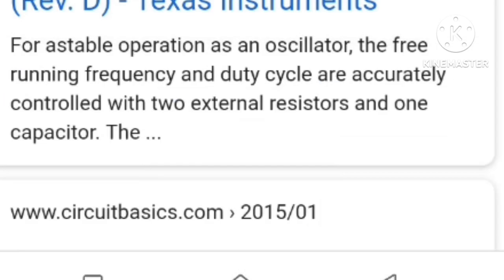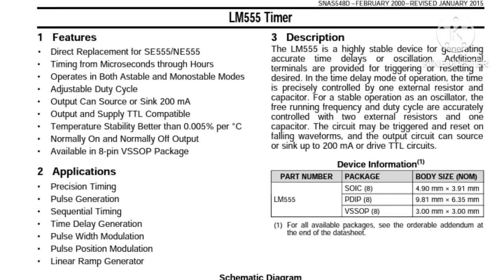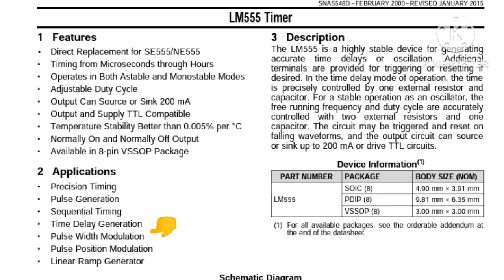Here we have the features of the IC, which is section one. The features describe the functionality of the IC and also the replacement for the IC. Section two describes where the IC can be applied and what it can be used for — this IC can be used to build a precision timer, a pulse generator, a sequential timer, a time delay generator, a pulse width modulator, a pulse position modulator, and a linear ramp generator.